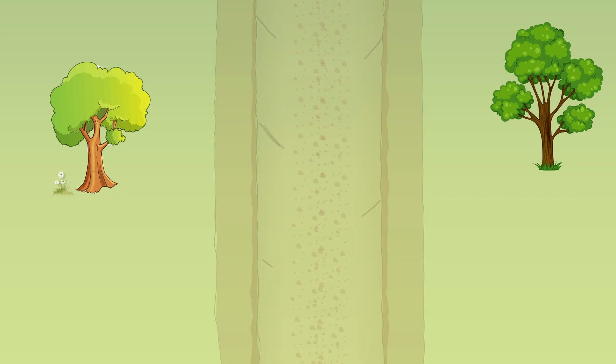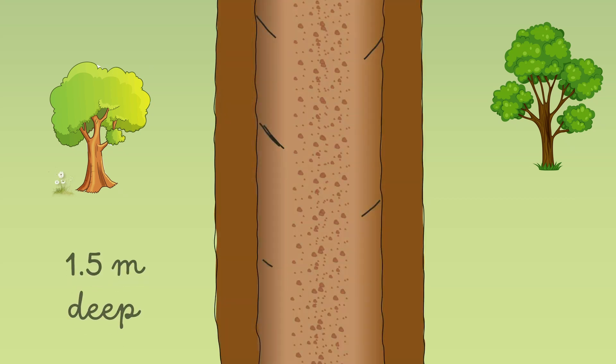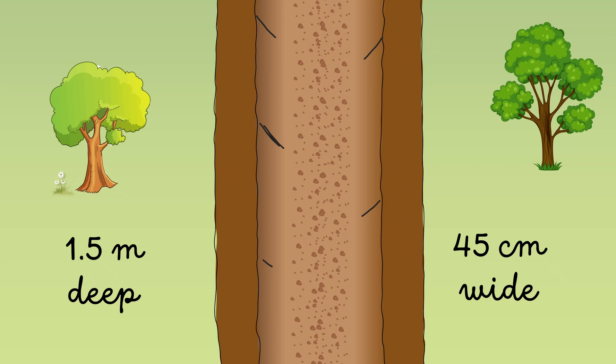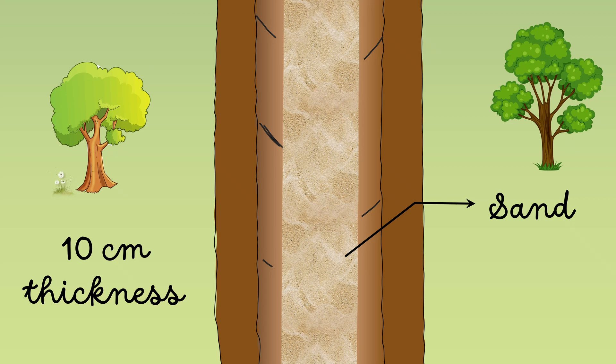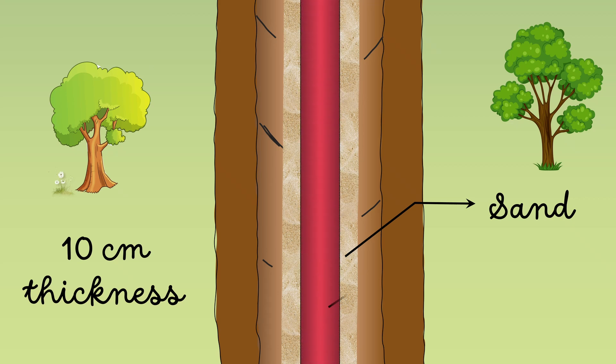In this method, a trench of about 1.5 meters deep and 45 centimeter wide is dug. The trench is covered with a layer of fine sand of about 10 centimeter in thickness. The cable is laid over this sand bed.